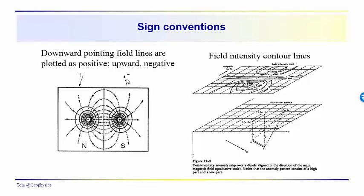These upward pointing vectors would be considered negative, even though they're over the positive pole, and the downward pointing vectors would be considered positive, although they're over the negative pole.